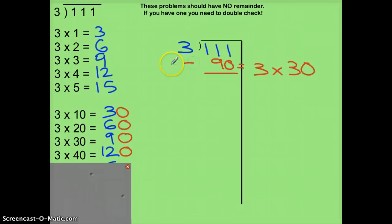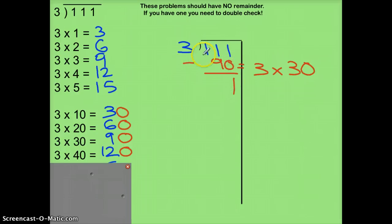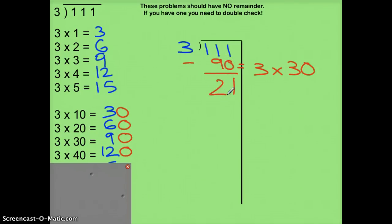Let's subtract. 1 minus 0 is 1. I'll just think about this as 11 minus 9, which is 2. What is this number telling me? Keep going. Why? Because you have enough to make more groups of 3.